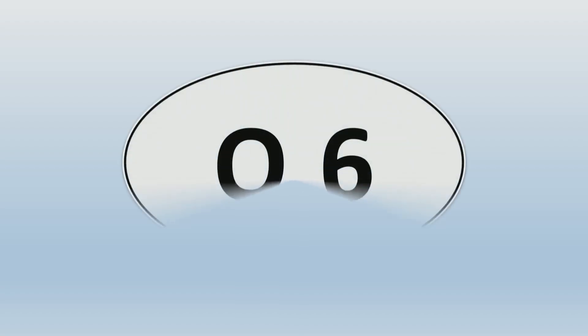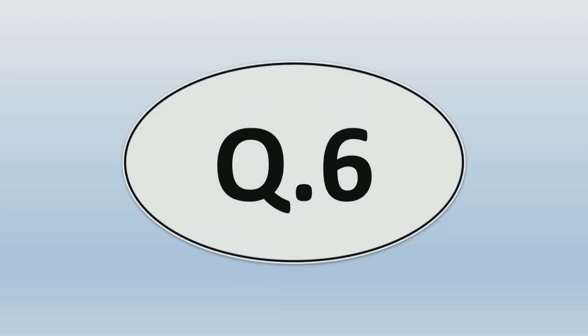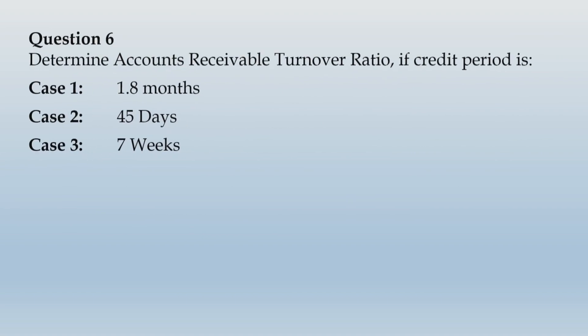We take up question number 6 from your book. Question number 6 reads: determine accounts receivable turnover ratio if credit period is — case 1: 1.8 months, case 2: 45 days, and case 3: 7 weeks.